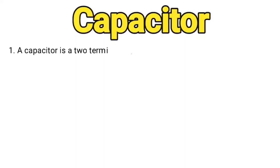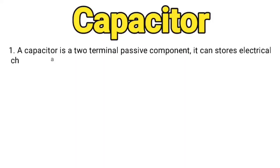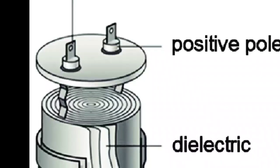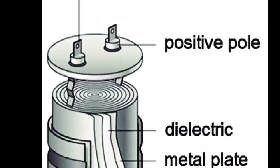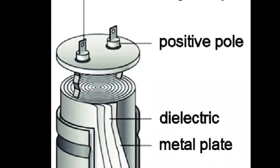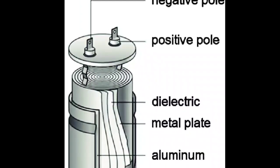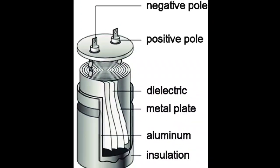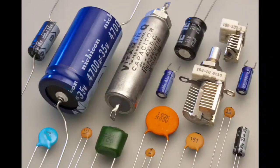A capacitor is a two-terminal passive device. It stores electrical charge. In this capacitor, we will separate the capacitor — it consists of plates separated by a dielectric material.